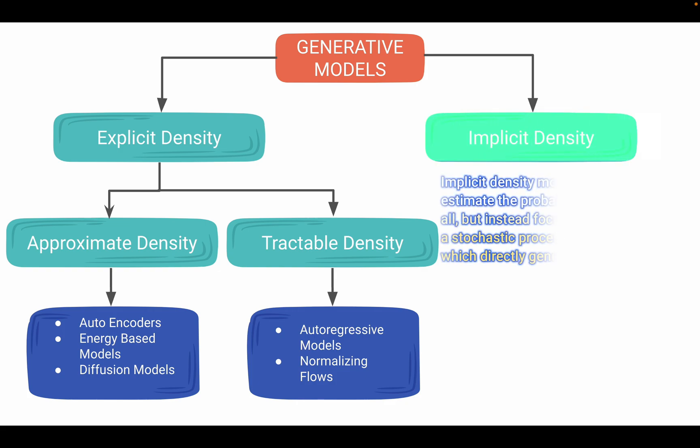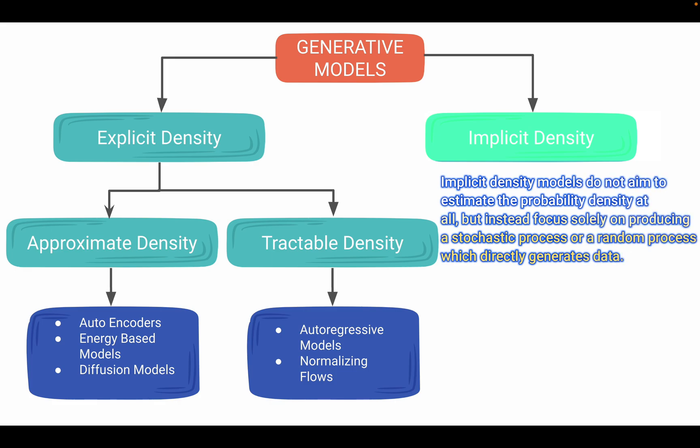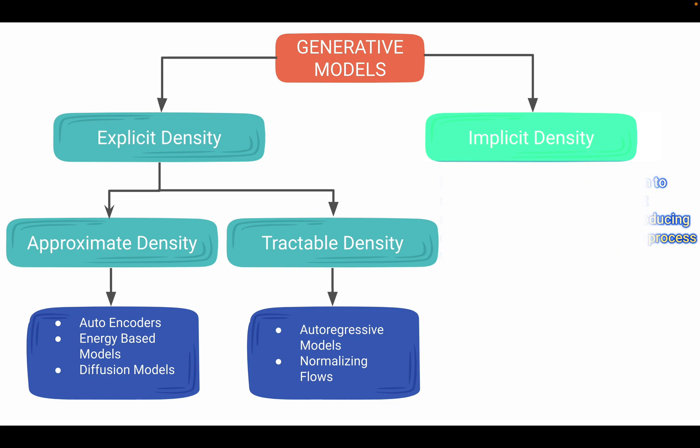These implicit density models do not aim to estimate any probability density like explicit density models but instead focus only on producing a stochastic process or random process which directly generates the data.